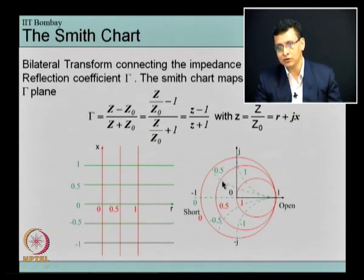These green dotted lines are actually portions of circles. For x equal to 1, small x equal to 1, I get a circle like this.